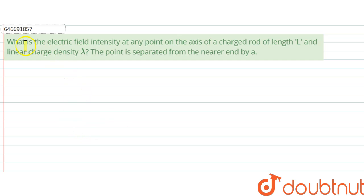Hello, we are giving you the question and the question says, what is the electric field intensity at any point on the axis of a charged rod of length L and linear charge density lambda? The point is separated from the nearer end by A.